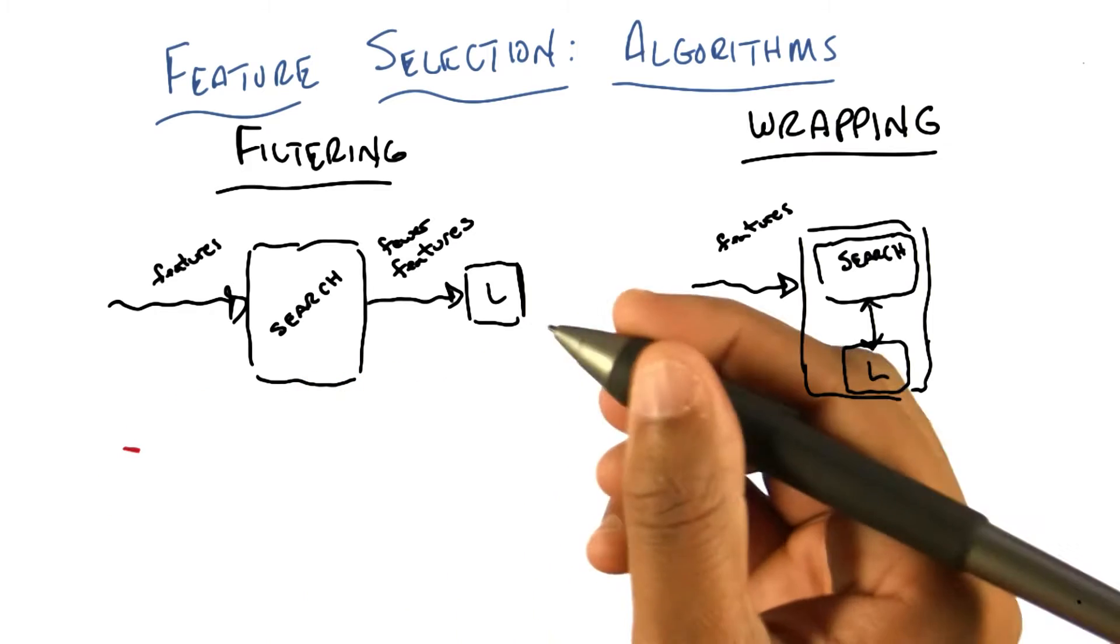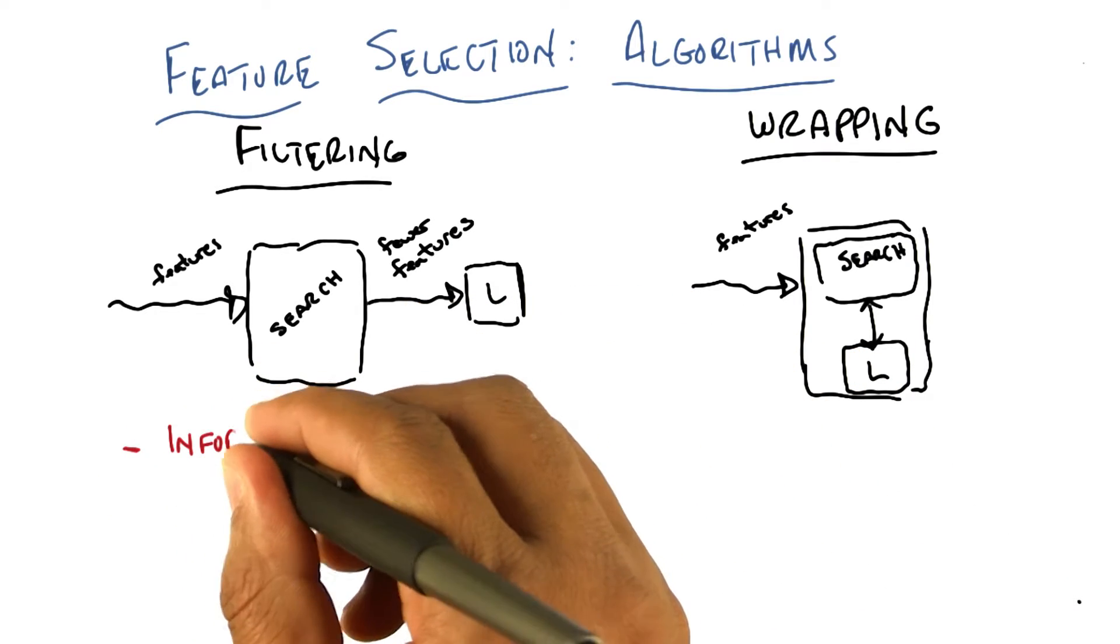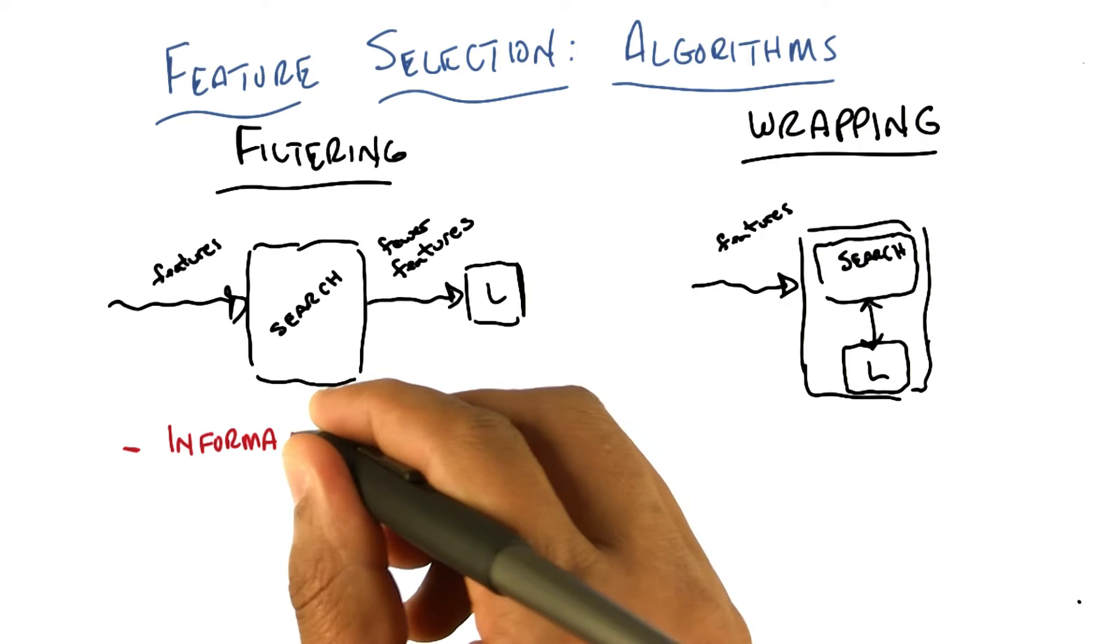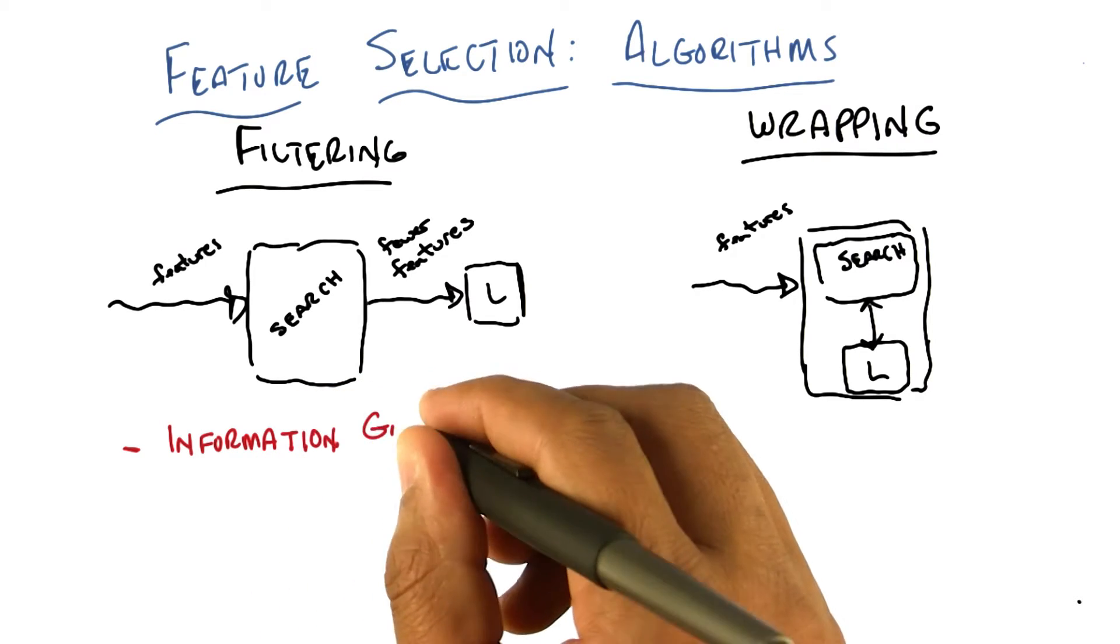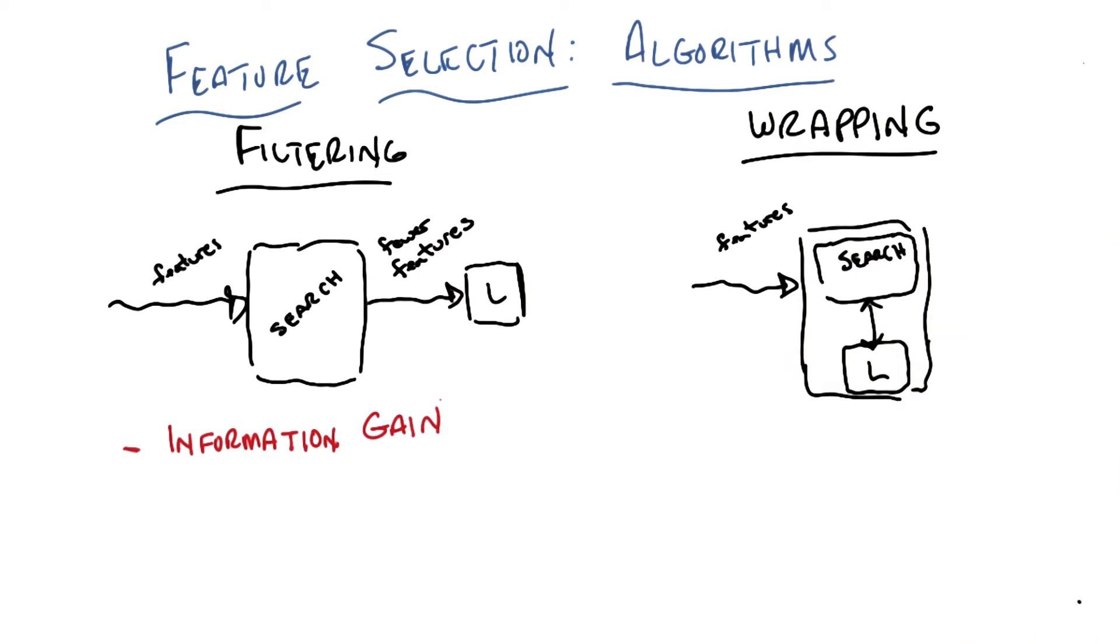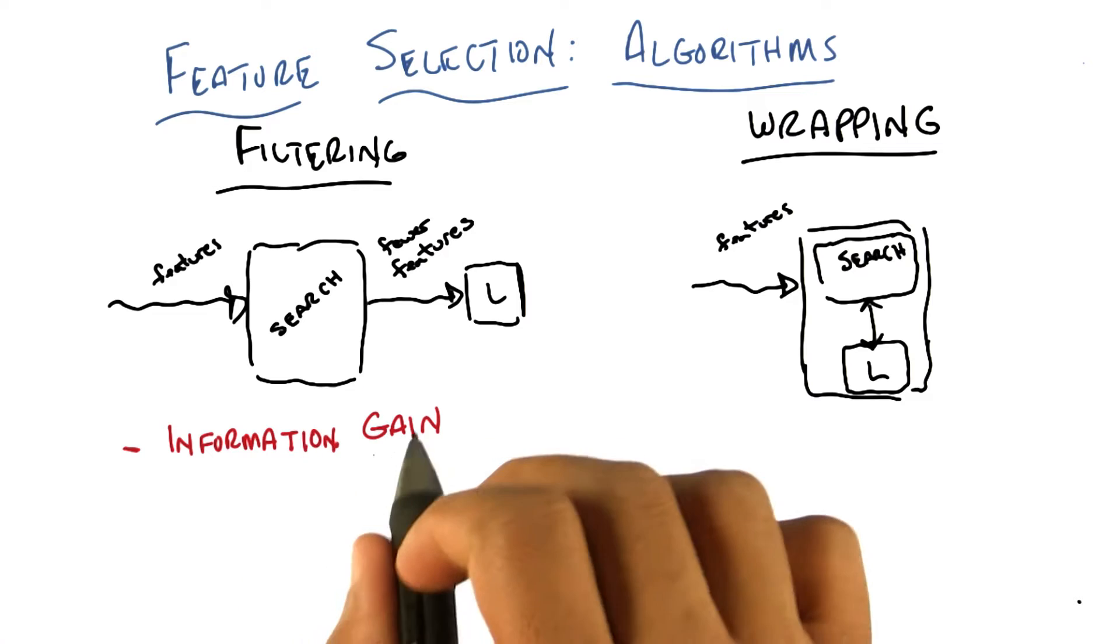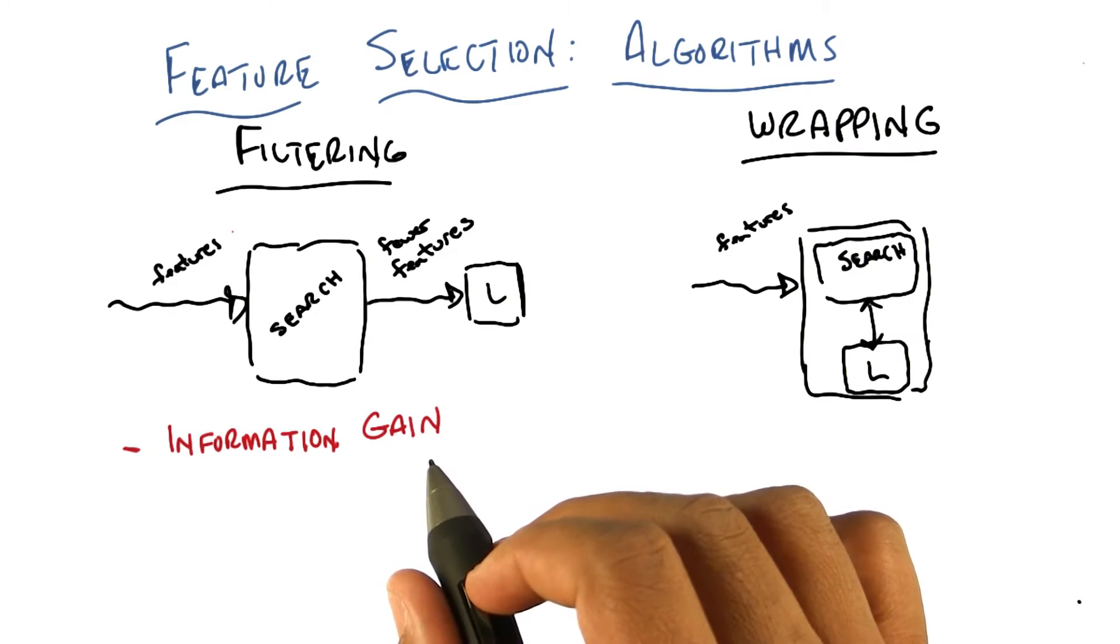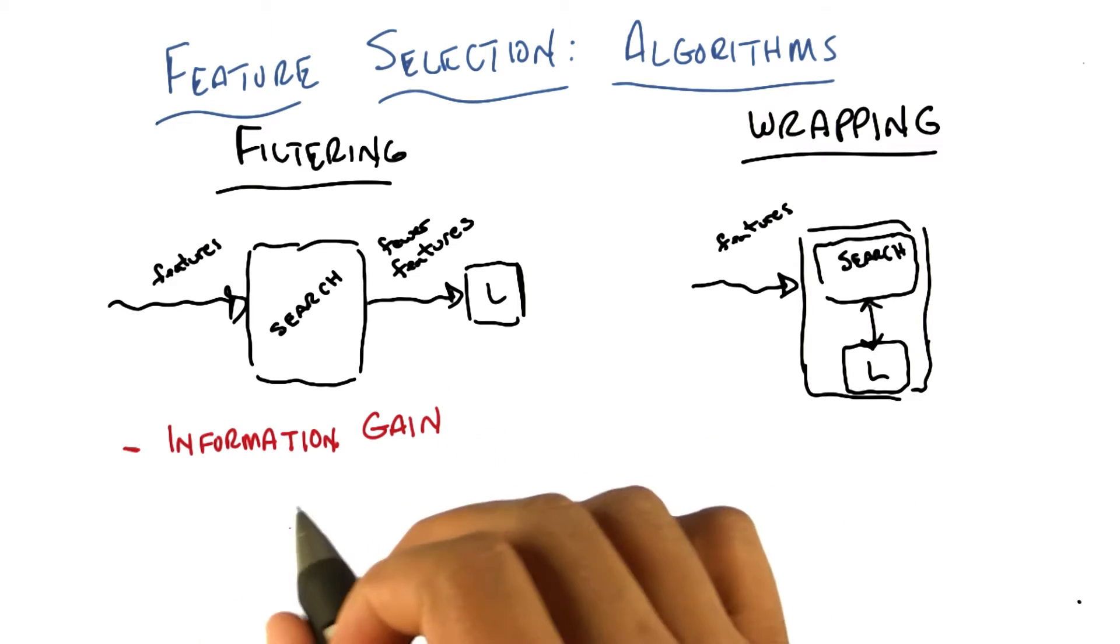So I just gave you an example of a kind of filtering you might do through decision trees, but really what I'm doing there is defining some criterion, and in this case it was information gain. This is a way that I will use to evaluate the usefulness of a subset of features. How much information does that feature give me about a class label? Can you think of any other kind of filtering criteria we might use?